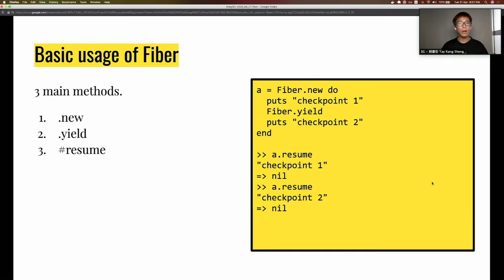How do we use Fiber? There are three main methods. From my understanding, there are only three main methods you really need to know about Fiber: the new method, the yield method which pauses the code, and the resume method which resumes code execution. I'll be going through each of these three methods using this code example on the right.